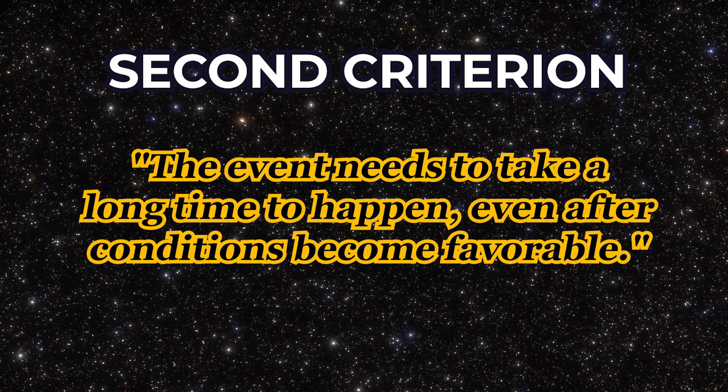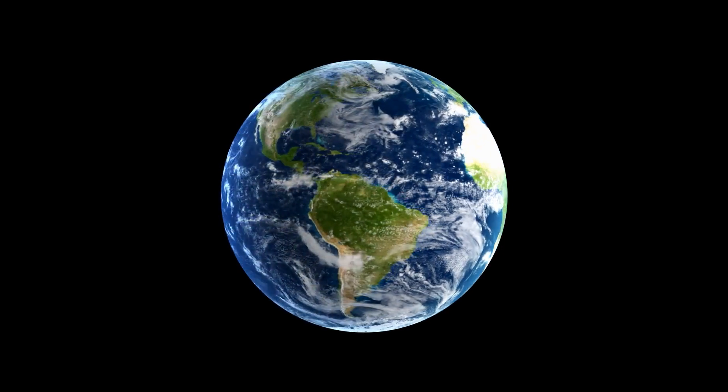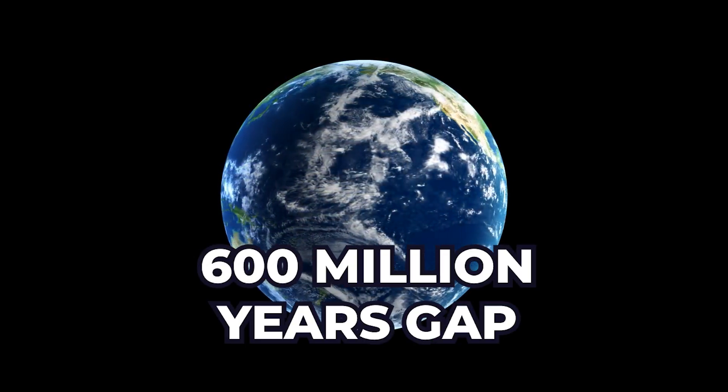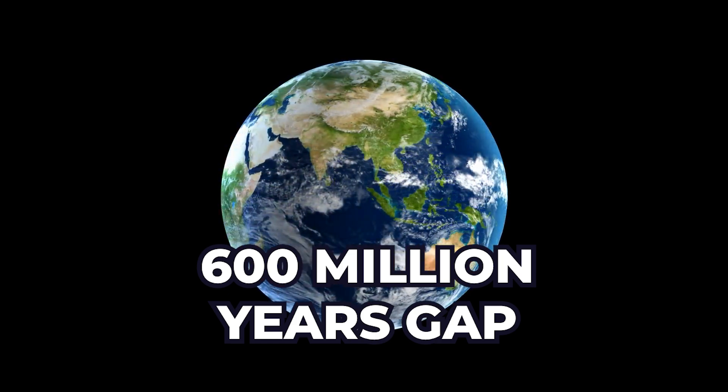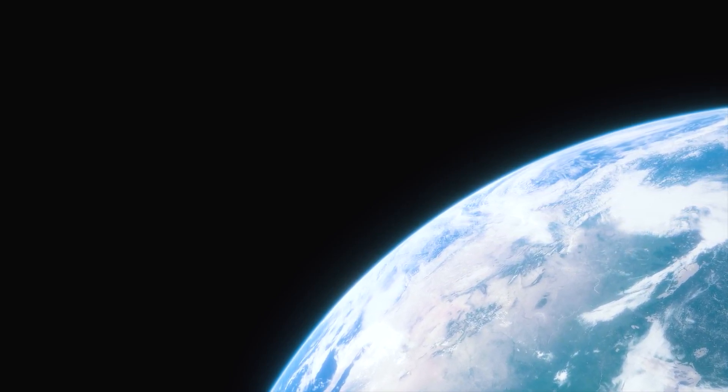Again, as far as we know, there was a 600 million year gap between the conditions for life on Earth becoming favourable and life actually emerging. And this time scale of about half a billion years is exactly what we need to satisfy the second criterion. Even with favourable conditions, it seems that life on Earth took a long time to emerge. So, is it possible that the emergence of life is the first Great Filter we have faced?